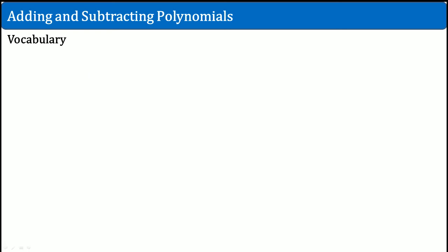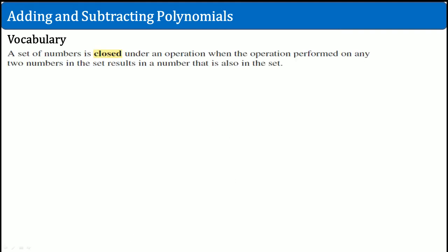This is section 7.1. We're going to be adding and subtracting polynomials. First, let's go over some basic vocabulary. A set of numbers is closed under an operation when the operation performed on any two numbers in that set results in a number in that set.